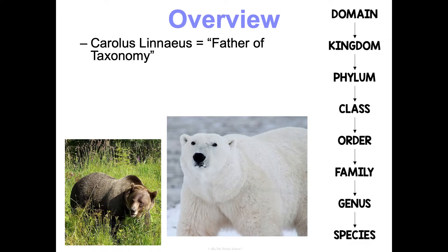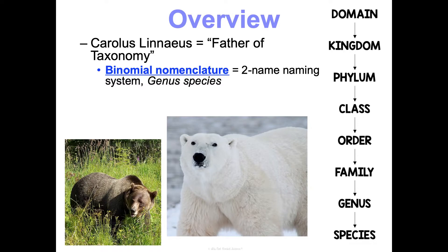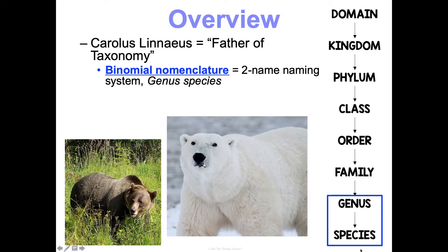The father of taxonomy is Carlos Linnaeus. He is known for binomial nomenclature, which is a two-name naming system that names organisms by their most specific name — their genus and their species. Domain is the most general, and you get more and more specific as you go. The more categories you share with another species, the more closely related you are. Genus and species — think of that as your first and last name, they're the most specific.